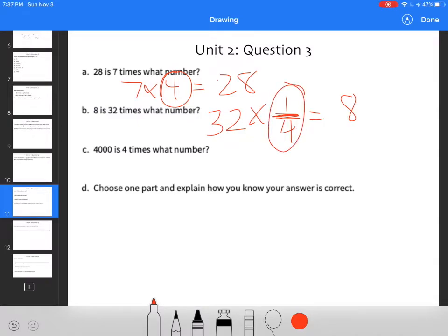4,000 is 4 times what number? So 4 times 1,000 equals 4,000.